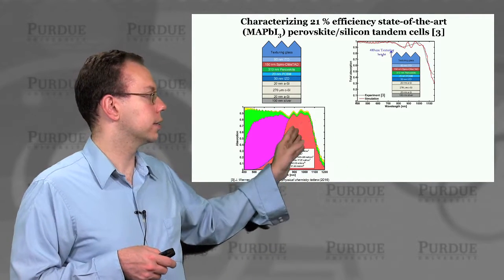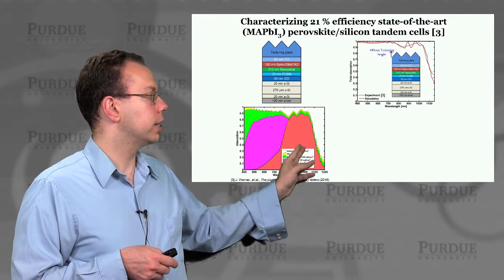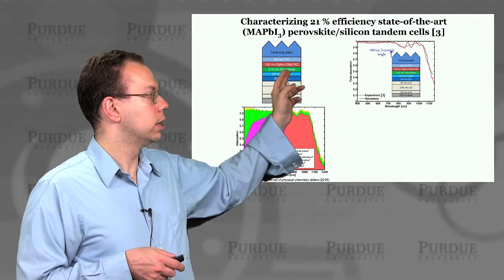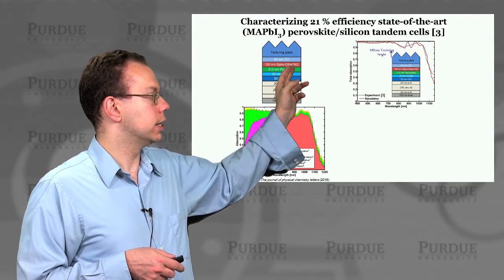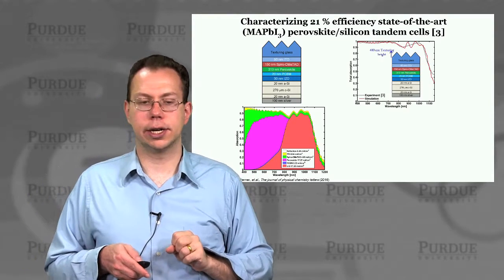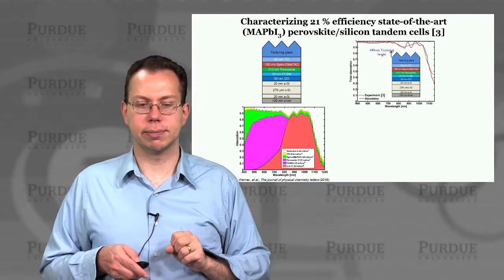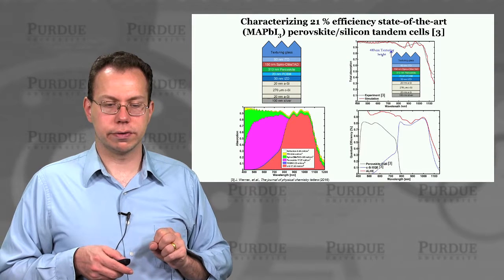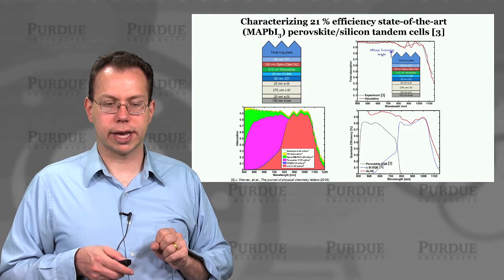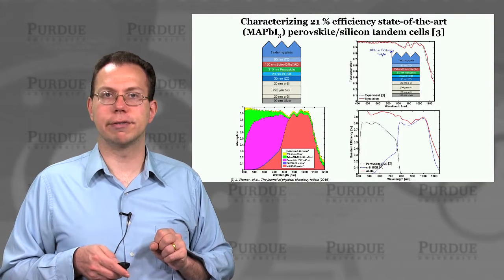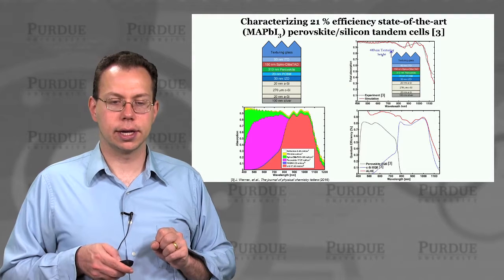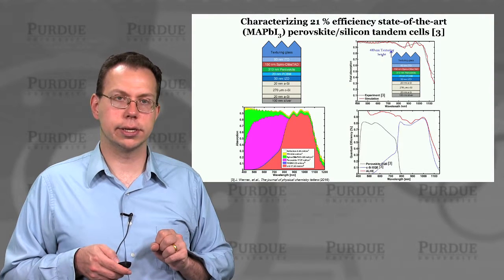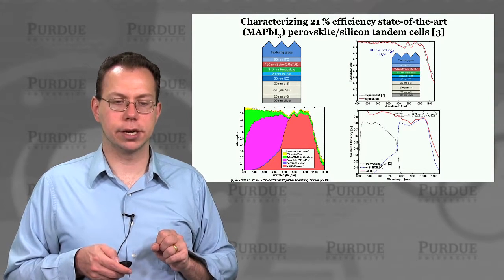Looking at the allocation of absorption to the various regions, spiroOMeTAD — the hole transport layer — actually creates a tremendous amount of parasitic absorption. However, if you get rid of that, the absorber light harvesting efficiency is really high in both the perovskite and the crystalline silicon. The crystalline silicon is not quite as high, but still pretty good.